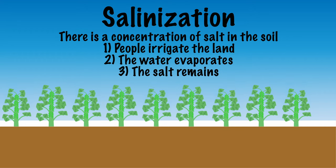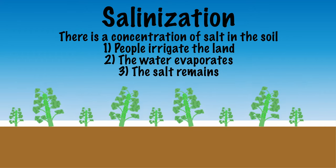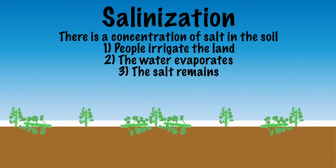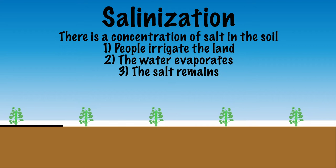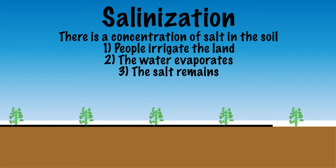As a result, the yield of agriculture is decreasing and thus there is soil degradation. One solution may be to improve the efficiency of irrigation channels, so that less water is needed and therefore less salt ends up on the land.